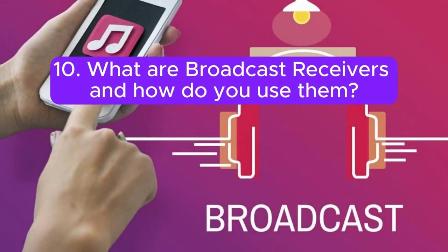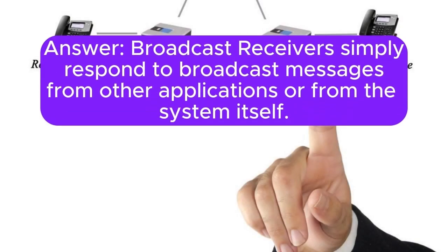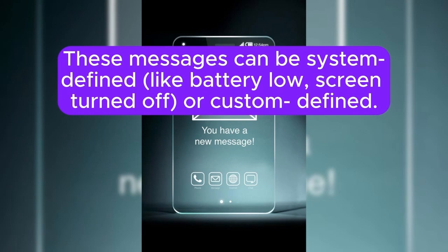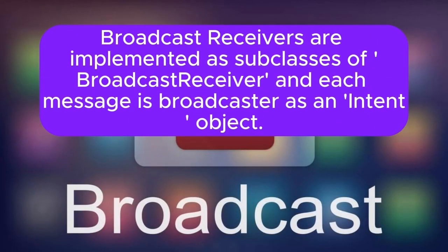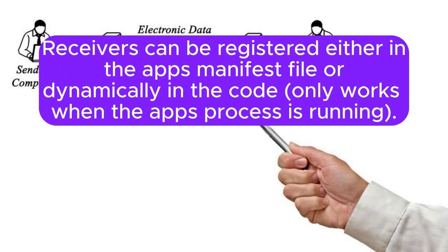Question 10: What are broadcast receivers and how do you use them? Broadcast receivers respond to broadcast messages from other applications or from the system itself. These messages can be system-defined, like battery low or screen turned off, or custom-defined. Broadcast receivers are implemented as subclasses of BroadcastReceiver, and each message is broadcast as an Intent object. Receivers can be registered either in the app's manifest file or dynamically in code, though dynamic registration only works when the app's process is running.